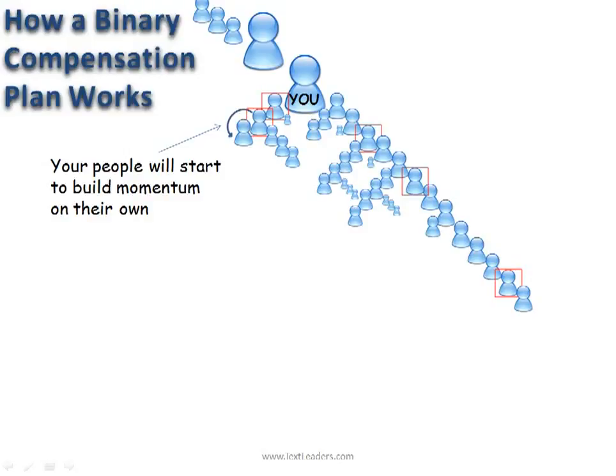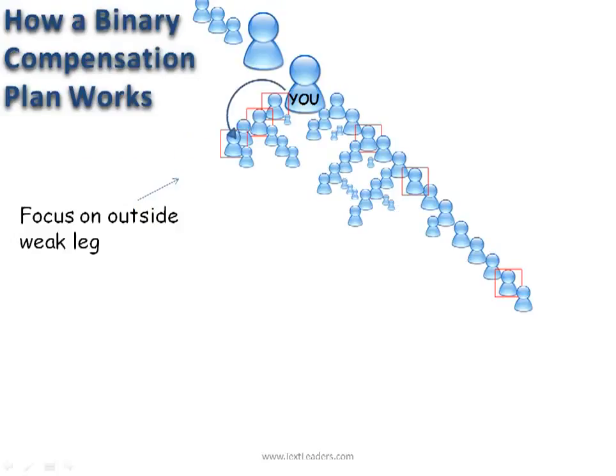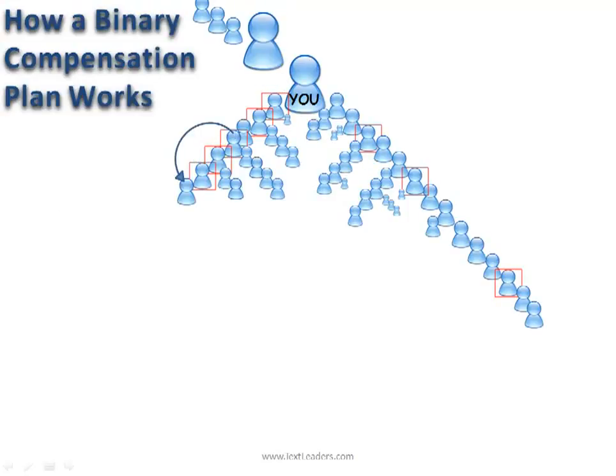You're going to notice when you get back here though, some building is going to start happening on its own. Your team is going to start sponsoring people and building their own teams. So you want to focus all your effort on the weak leg and start putting people on the outside. Those people are going to need to put two people on each side of their business and you're going to ask them to also put three people on the shared leg. This is going to create momentum for you and you keep putting people on the outside of your leg.